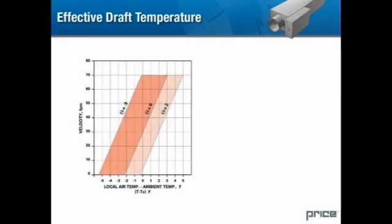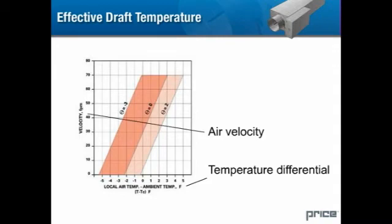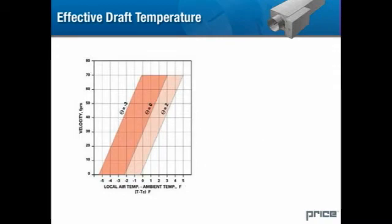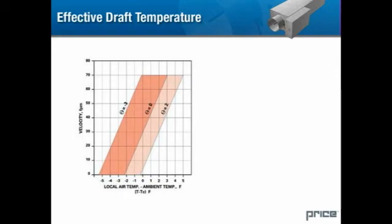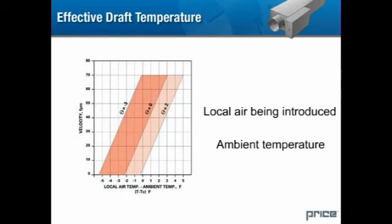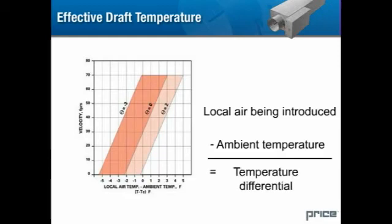This chart shows the relationship between temperature differential and air velocity in the occupied zone. Any combination of temperature and velocity which falls outside the shaded area would be perceived as a draft. Note that the temperature values given are the difference between the local air temperature and the ambient air temperature in the occupied zone.